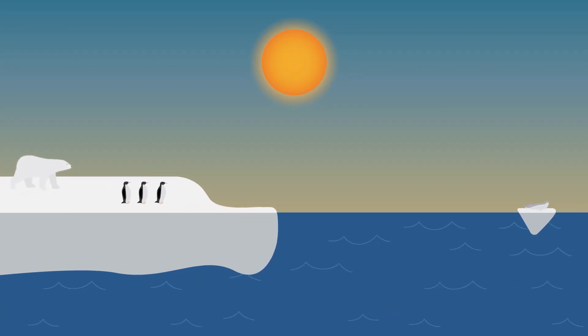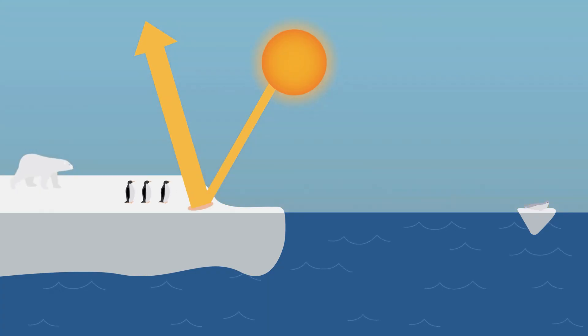The more ice on Earth, the more bright surfaces available to reflect incoming sunlight to outer space, which ultimately helps cool the planet.